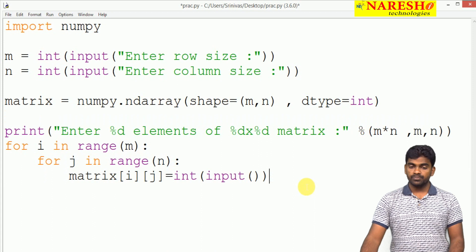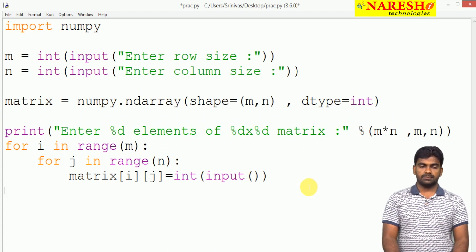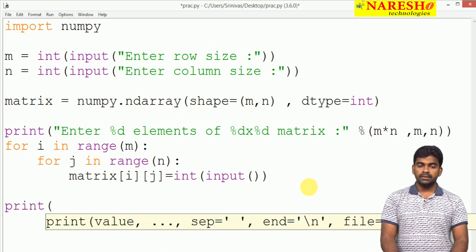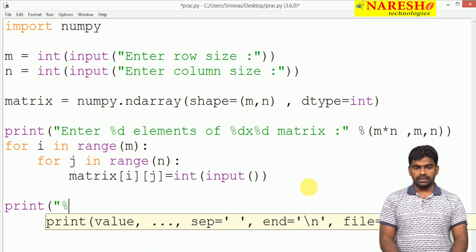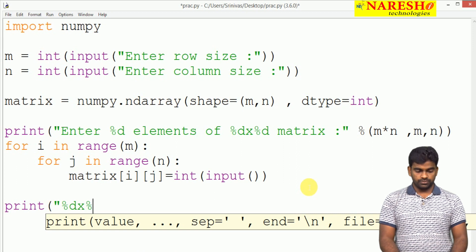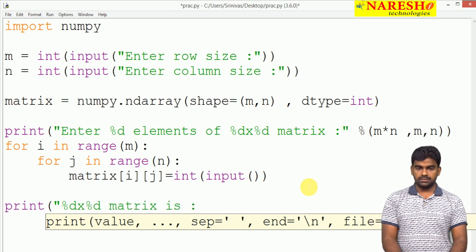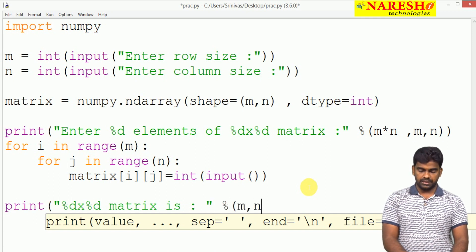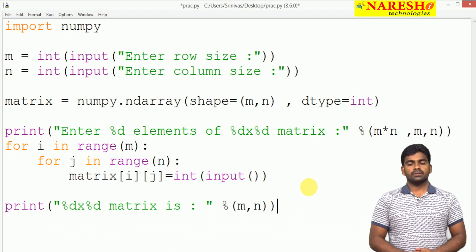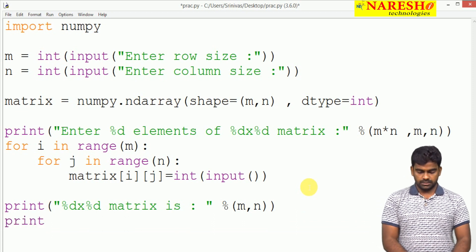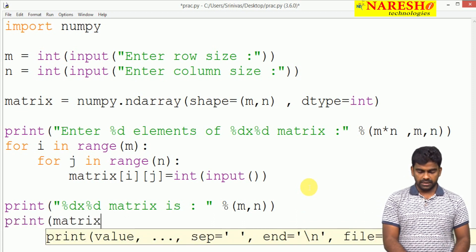After reading, I am printing the matrix. Print clearly the matrix. It is like 3 by 3, 2 by 3 like this. Suppose percentage d, percentage d matrix is, and once again percentage d m comma n we are giving. Whatever the matrix we constructed, that we are printing.